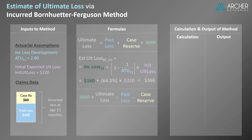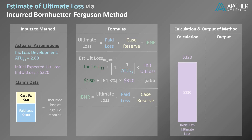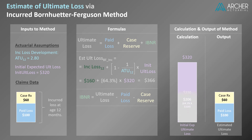Let's see how this method compares graphically. Once again, we'll start by graphing our initial expected ultimate loss of $320. Using the formula, we know that estimated ultimate loss equals incurred loss plus 64.3% of the initial expected ultimate loss, or $206. The $206 represents IBNR via the incurred BF method. We can verify this amount using our formula for IBNR.